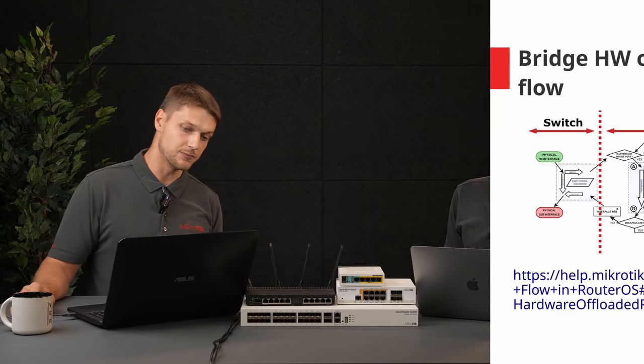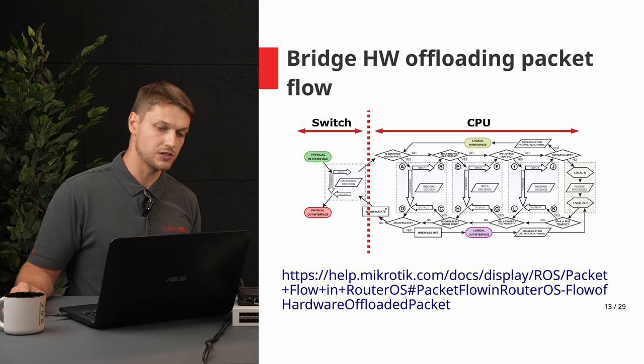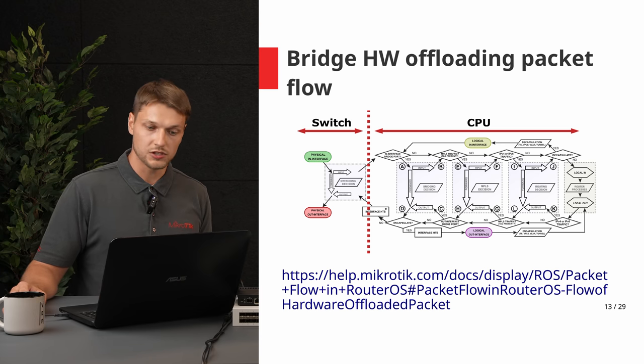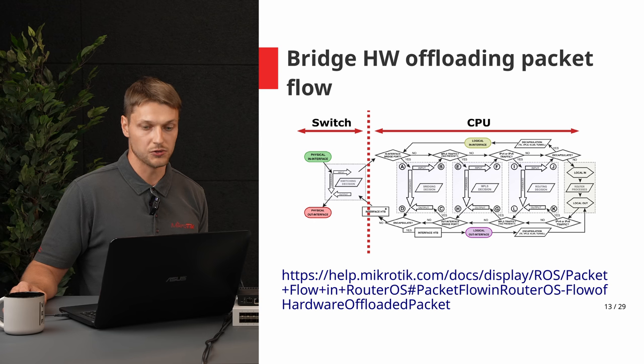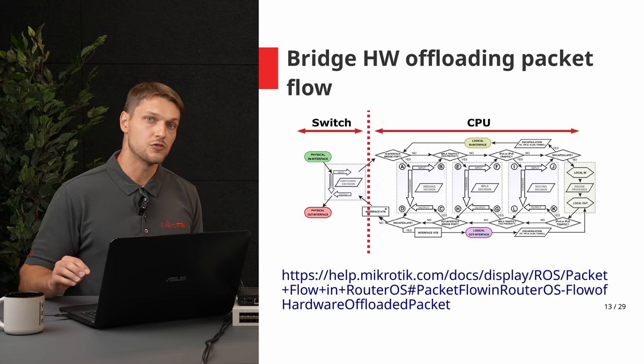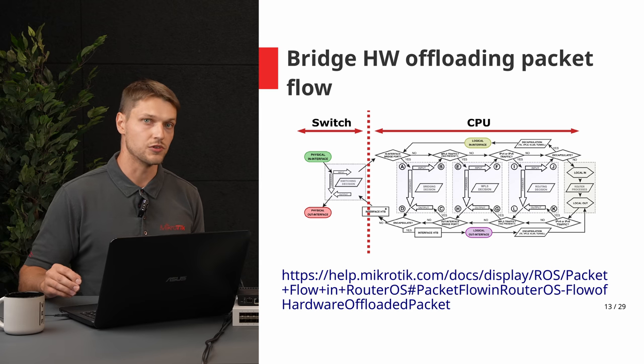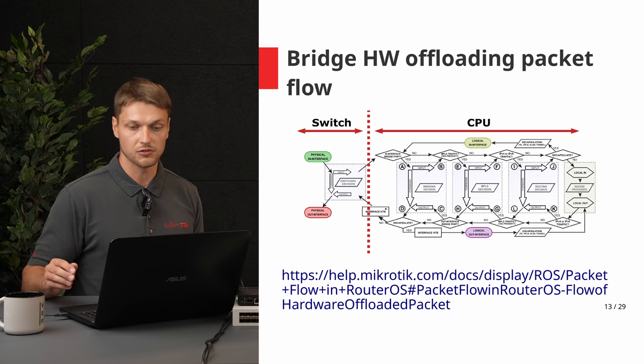What about bridge filter rules — sometimes they don't work. This is an overview of where bridge hardware offloading fits into the RouterOS packet flow. Bridge hardware offloading takes place before the CPU, so packets forwarded by the switch can bypass tasks like bridge forwarding, bridge filters, and even the sniffer and traffic control.